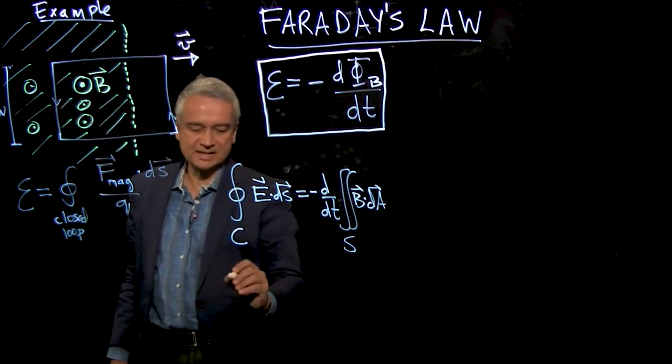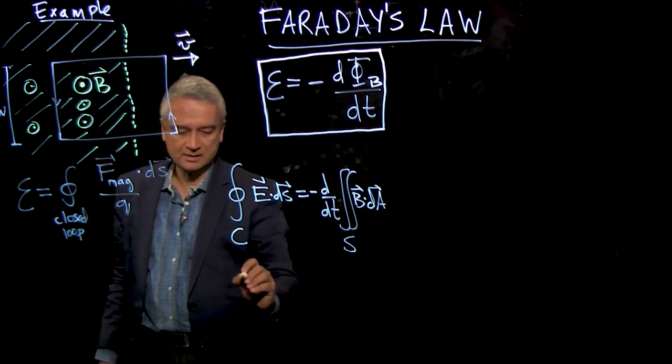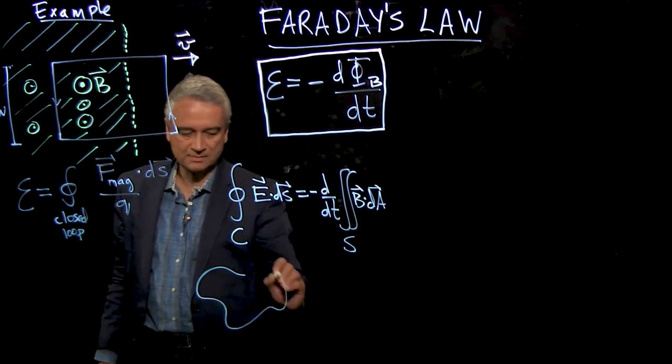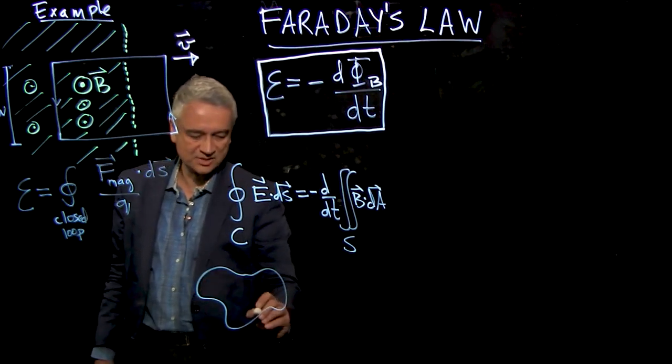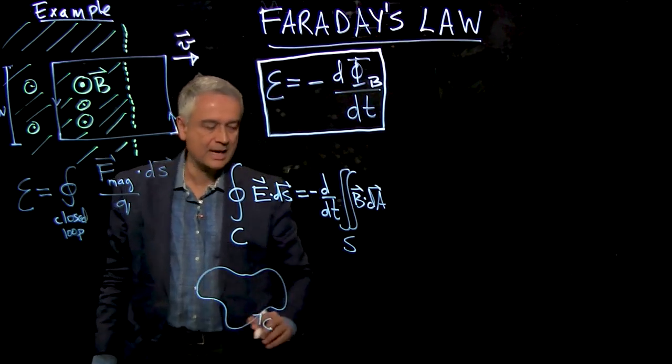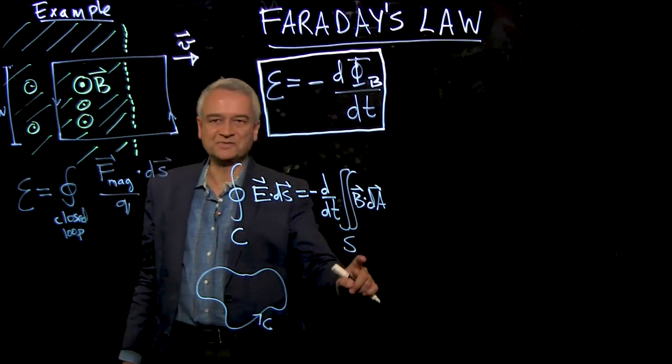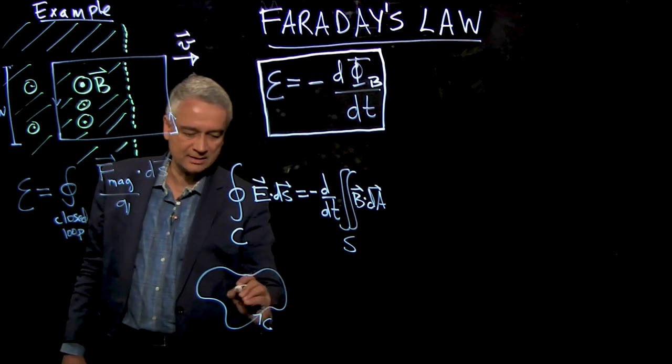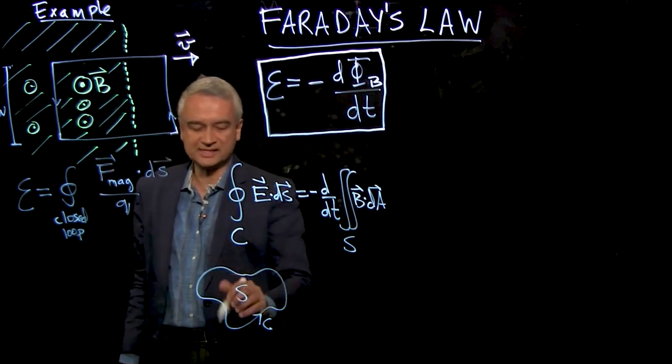The generalization is that this loop C can be any contour. This is the contour C. And the surface area S is the surface whose boundary is the contour C.